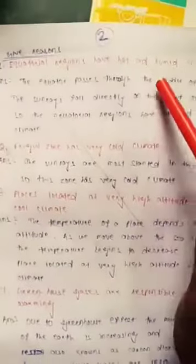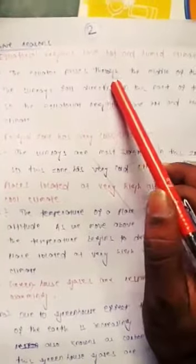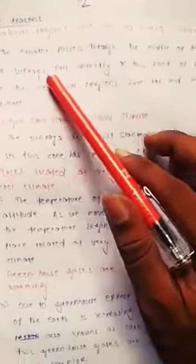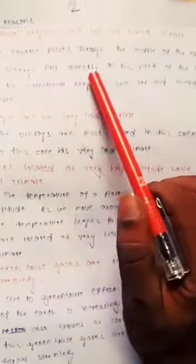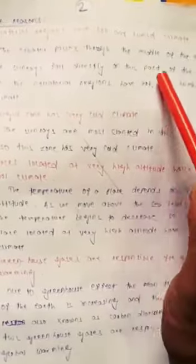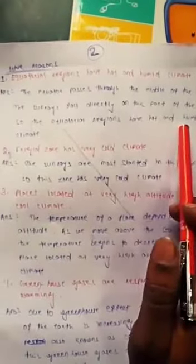Short answer: The equatorial regions have hot and humid climate. Why? The equator passes through the middle of the earth. The sun rays fall directly on this part of the earth, so the equatorial regions have hot and humid climate.